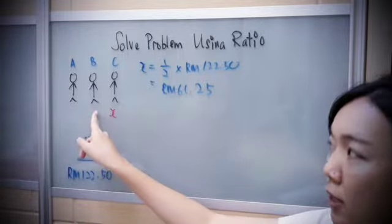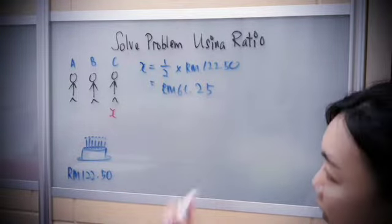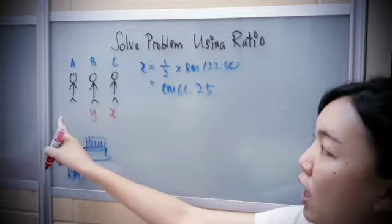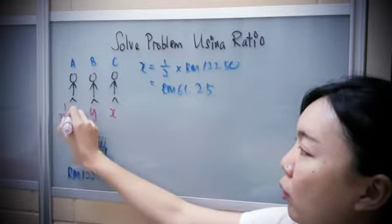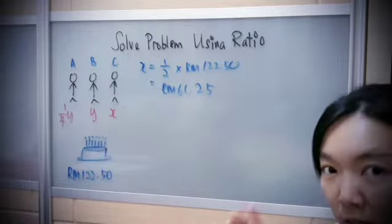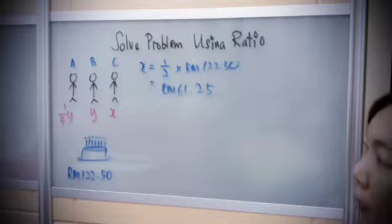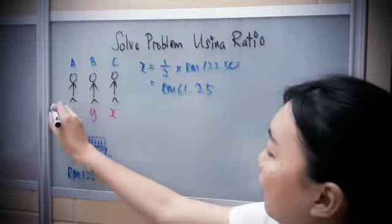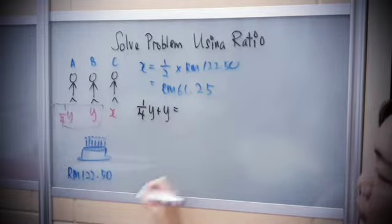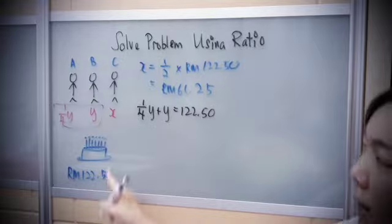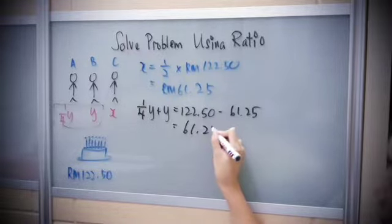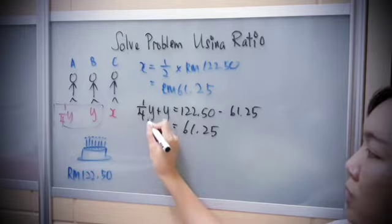Now, A pays a quarter of what B pays — but how much does B pay? I don't know, so I give B the name Y. If B pays Y, then A pays one-quarter of Y, which is (1/4)Y. Now I can group these together: (1/4)Y plus Y equals the total cost minus what X has paid. From the calculator, that is RM61.25. One-quarter Y plus one Y becomes five-quarter Y, so (5/4)Y.